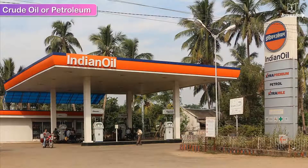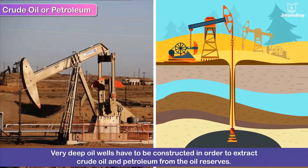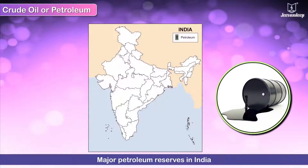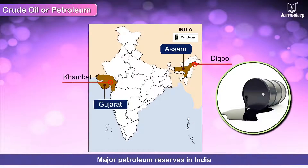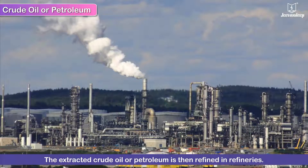Crude oil or petroleum is a valuable and very useful mineral and an important source of energy. It is found in a thick, dark form in the deep interior of the earth and under the sea bed. Very deep oil wells have to be constructed to extract crude oil from the oil reserves. Most of India's oil reserves are at Mumbai High on the western coast. Petroleum is also found at Digboi in Assam, and Cambay and Ankleshwar and Kalol in Gujarat.